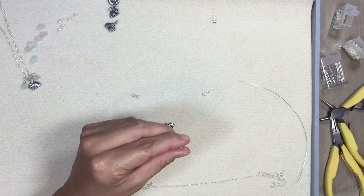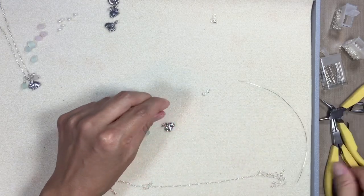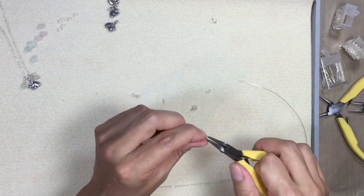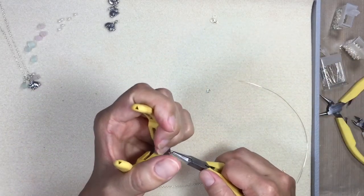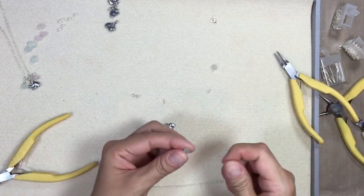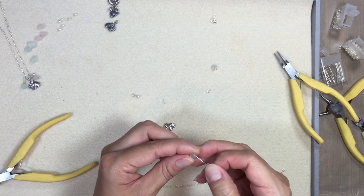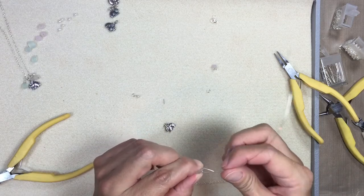Cut off this extra wire. Attach a jump ring and then I'll briolette wrap this. This is a tip drill bead so it takes a little bit more effort than a basic wire wrap.